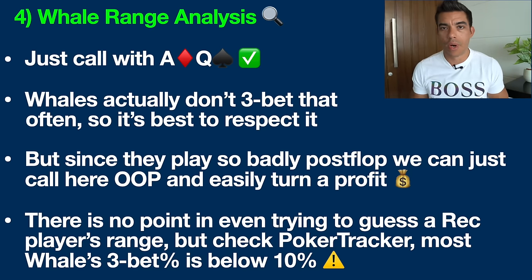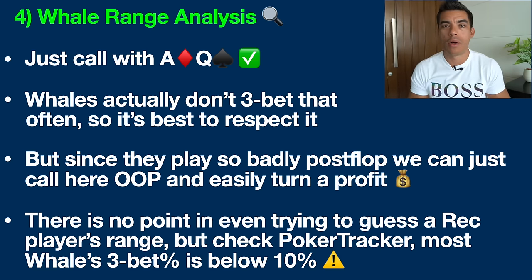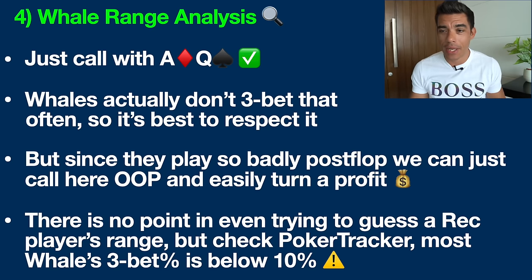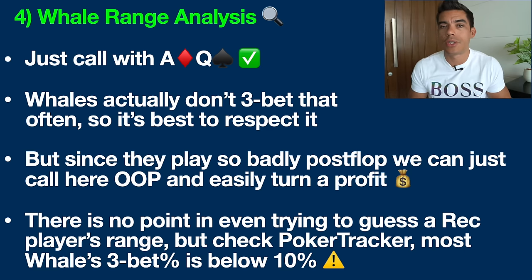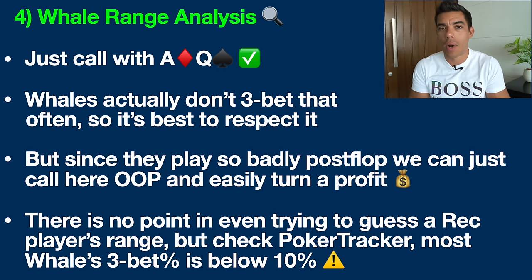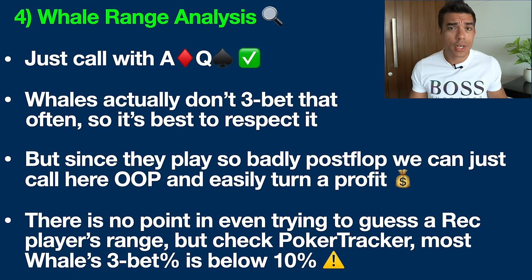The whale is one of two recreational player types — these are the people we make money from in poker. We raise ace-queen in middle position, get repopped by a whale on the button, and we should just be calling. The whale plays way, way too many hands, often limping with anything that looks remotely pretty — any two cards. But what a lot of people don't understand is that whales are actually not very aggressive at all; they're the passive recreational player type. They don't three-bet you with total garbage very often.